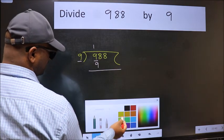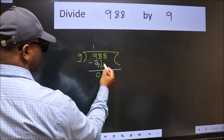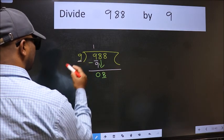Now we should subtract. We get 0. After this, bring down the beside number. So 8 down. Now here we have 8 and here 9.